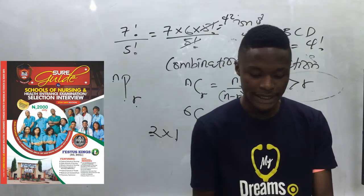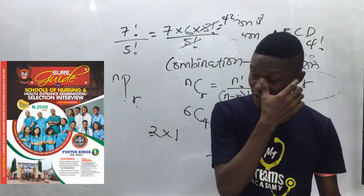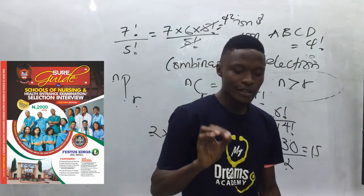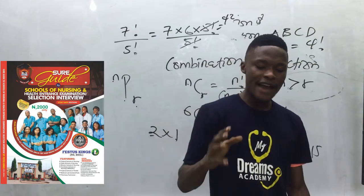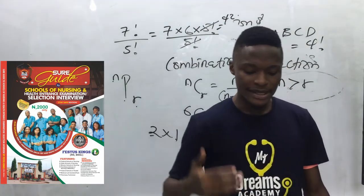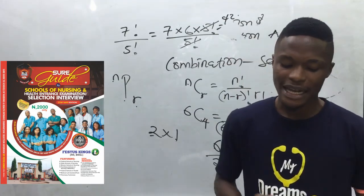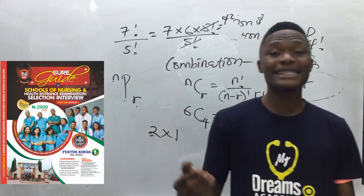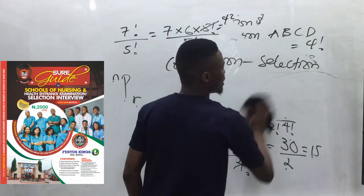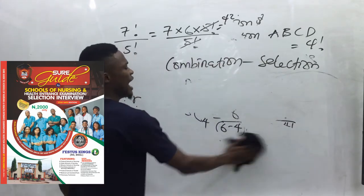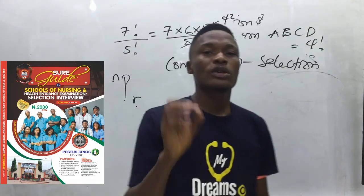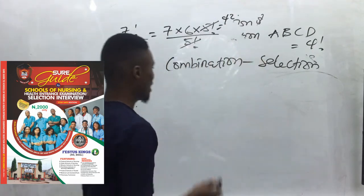From page 120, question 13: in how many ways can two students be selected from a group of five students in a debating competition? The keyword is 'selected,' so this is combination. Five combination two.